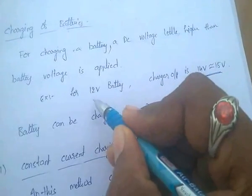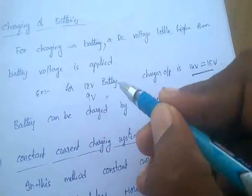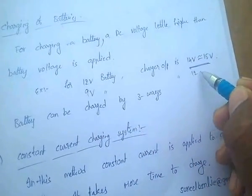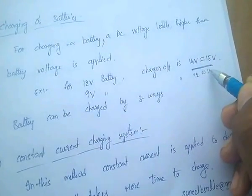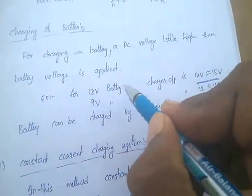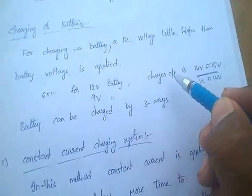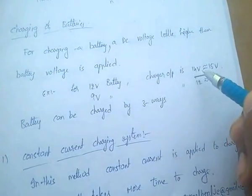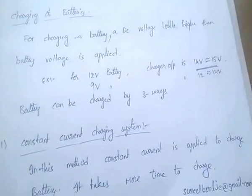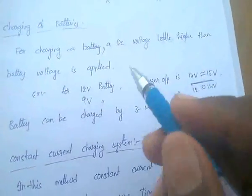For a 6-volt or 9-volt battery, the charger output must be 12 to 14 volts. Mainly we use 12-volt batteries, and for charging a 12-volt battery the charger output must be 14 to 15 volts for the battery to charge.